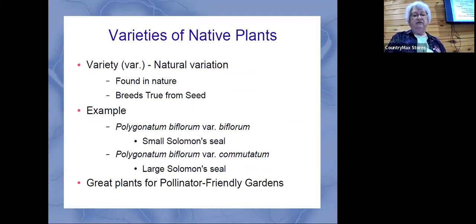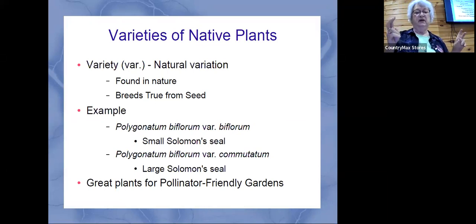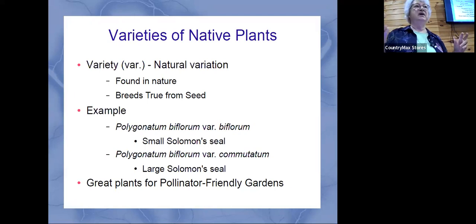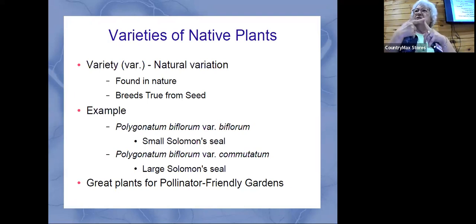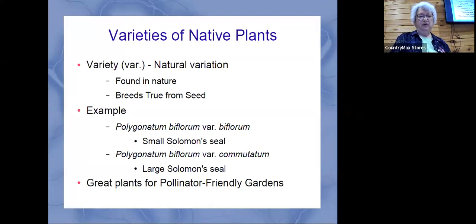There are some terms we need to know regarding varieties of native plants. A variety is the natural one found in nature. That's important because if you collect seeds and grow additional plants, it's going to grow true to what you expect because it's a native seed. If you bought a hybrid — two different plants mixed together to make a new plant — if you tried to grow those seeds, they probably would not grow true to the plant you bought.